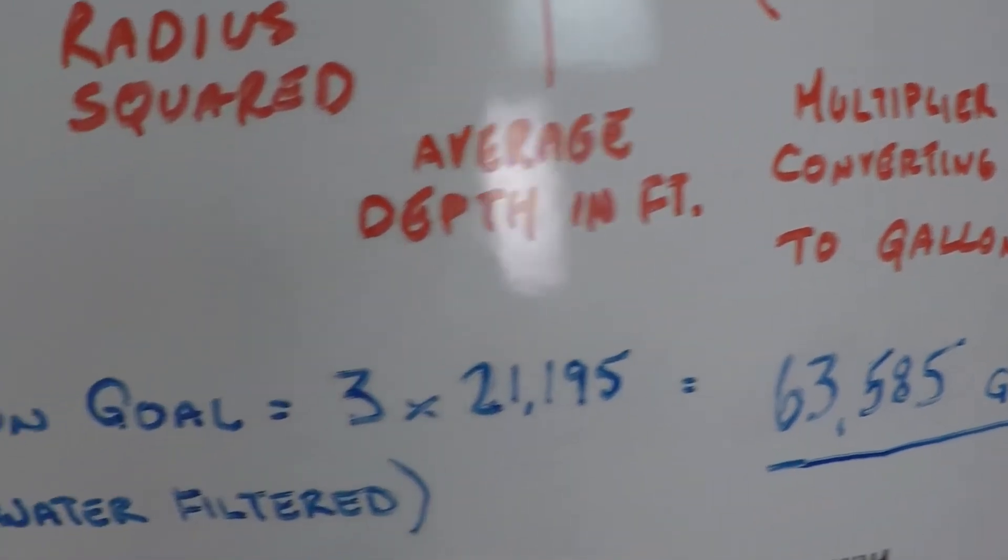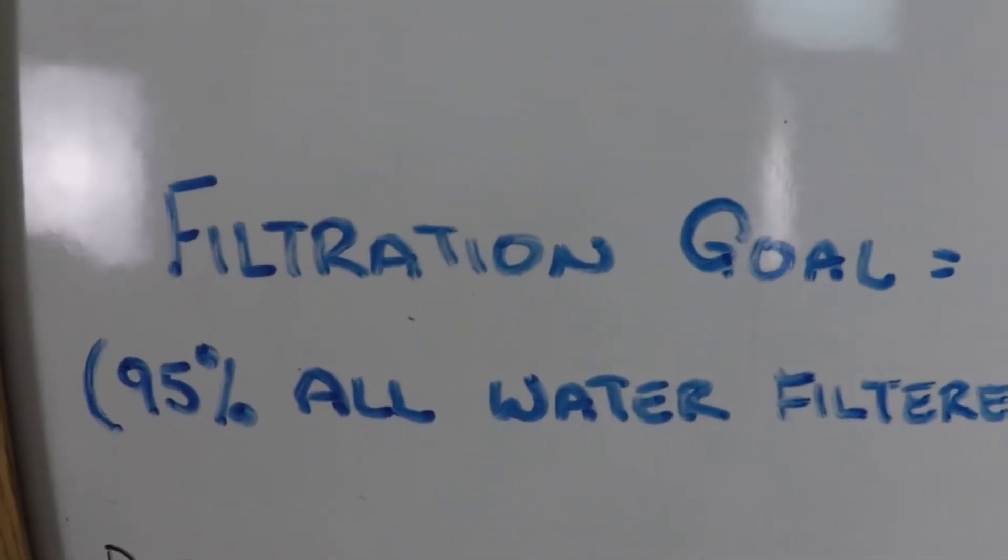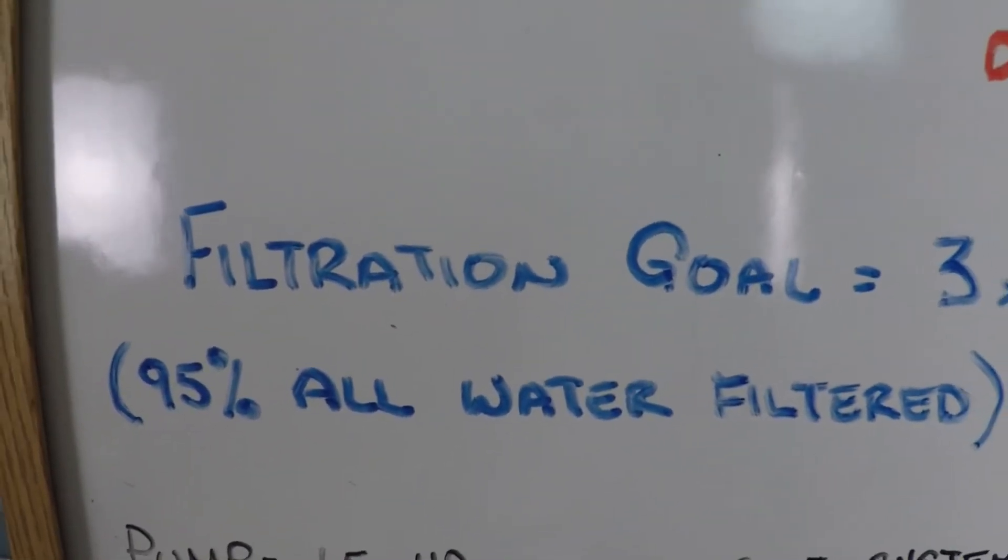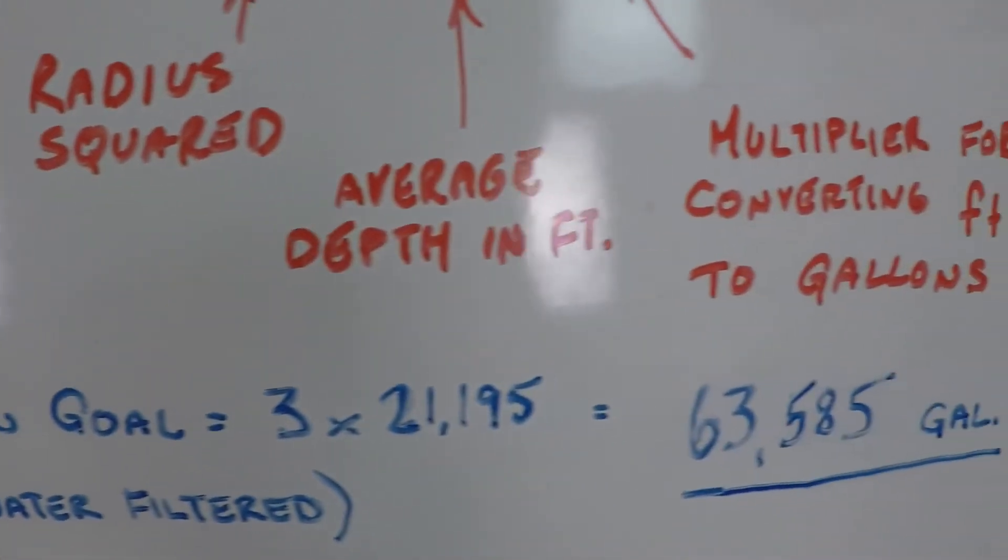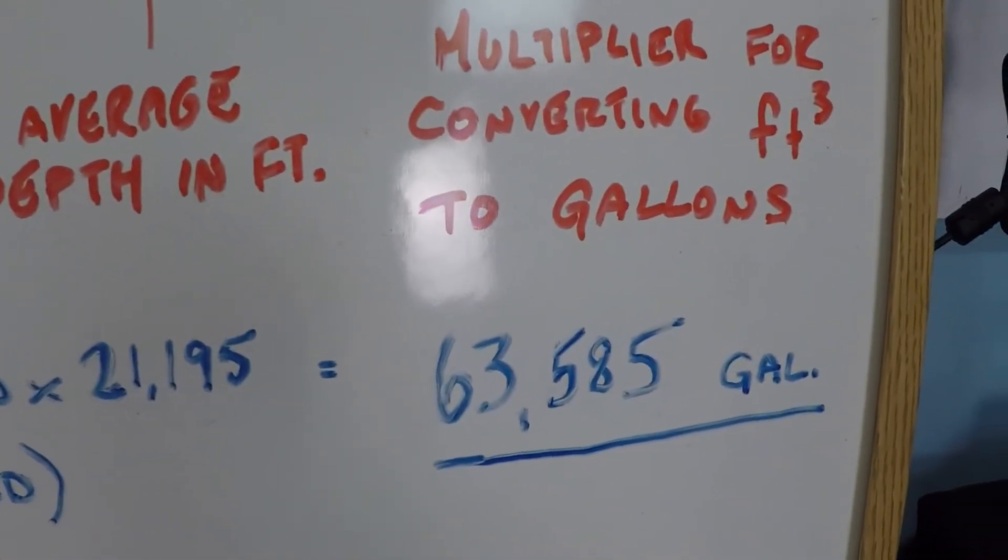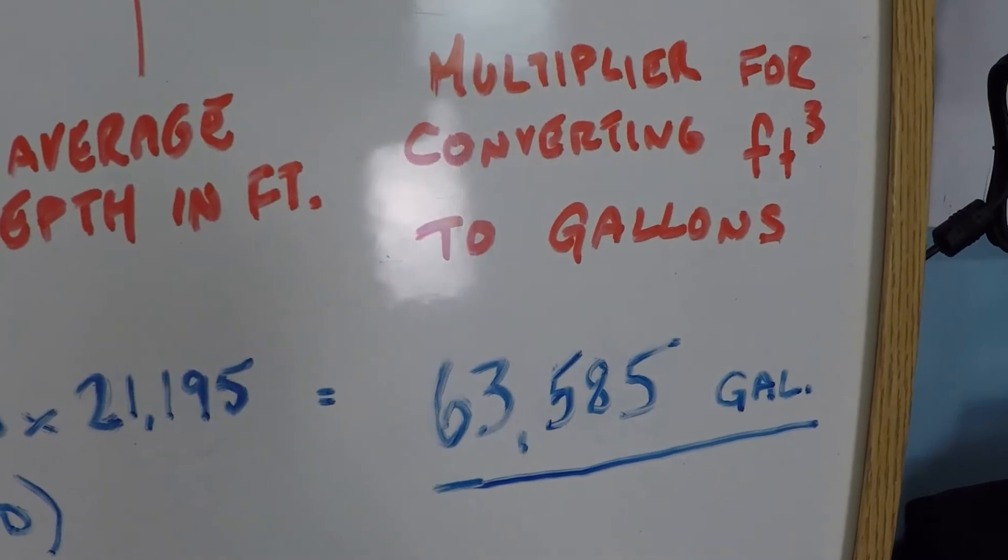The first way that you make that happen is you filter your water properly. And what does properly mean? Well it means you filter all of your water every day or as close as you can get to that goal. In this case, 63,585 gallons is our goal.